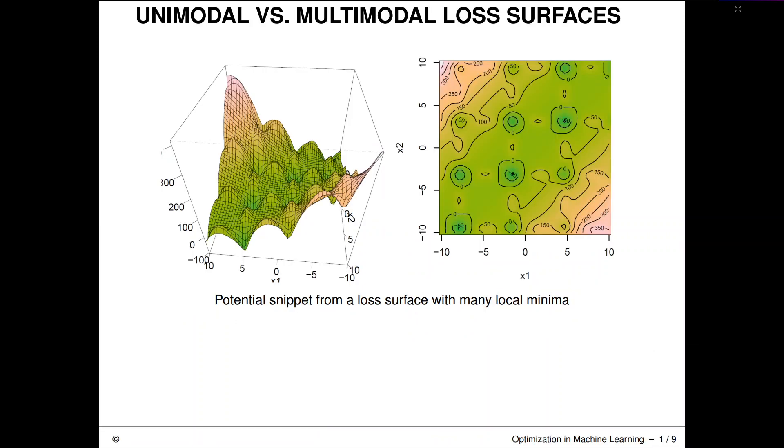This is how a multimodal function would look like. That's the definition of a multimodal function - it has multiple modes. In our case, if we are minimizing, it has multiple local minima.